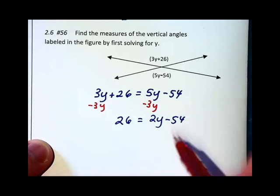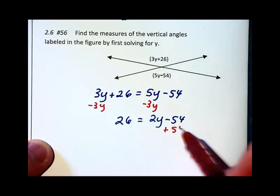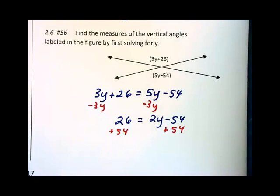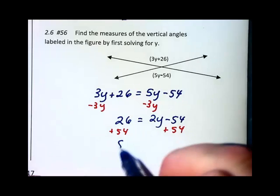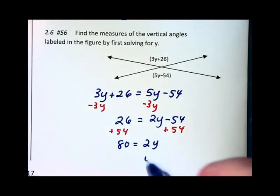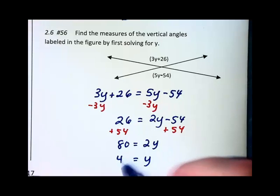And I'm going to then add 54 to each side of the equation. And that will give us 80 on the left is equal to 2y. And dividing each side by 2 gives us y equals 40.